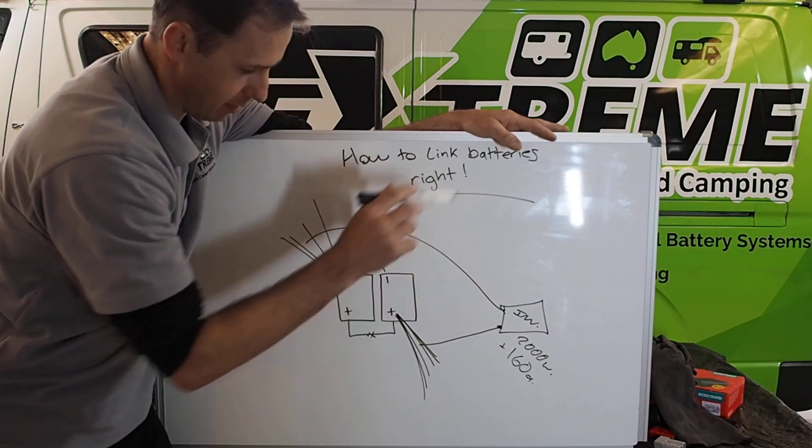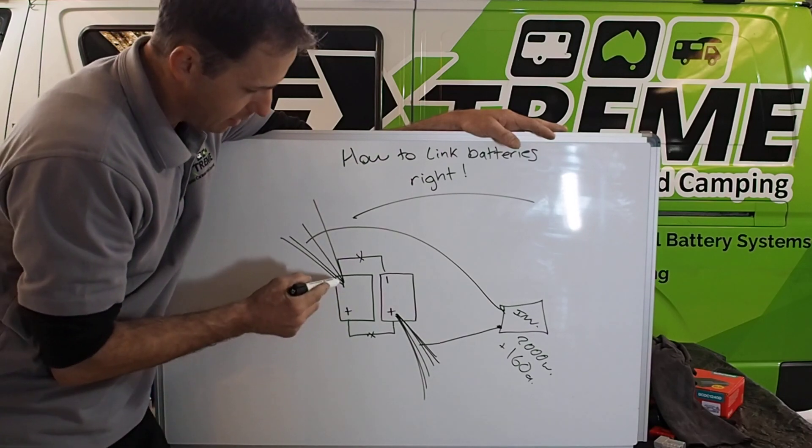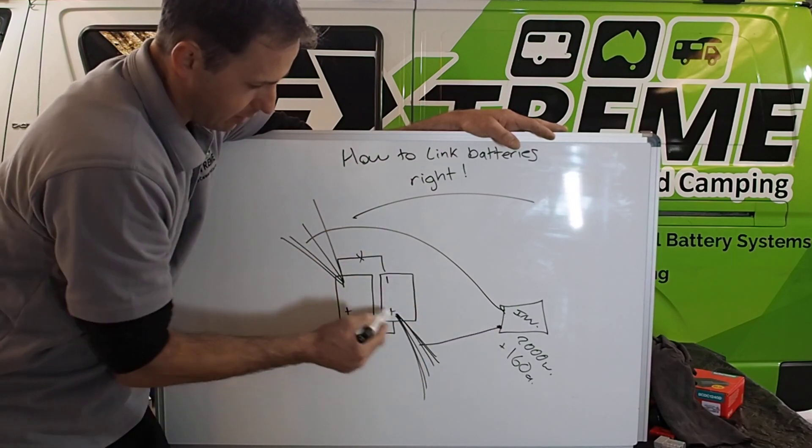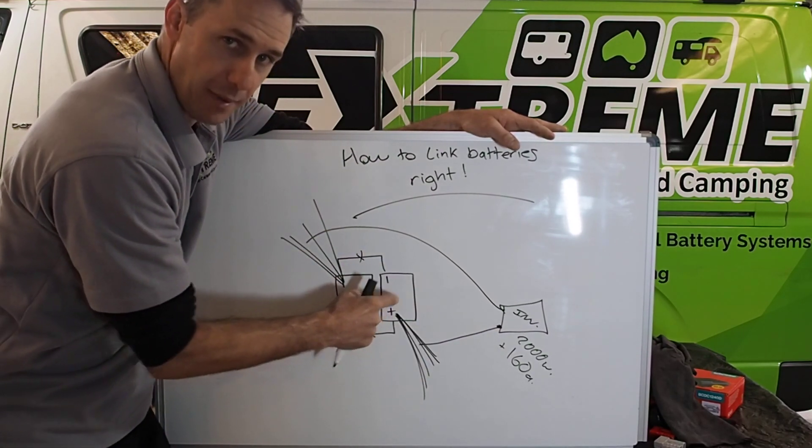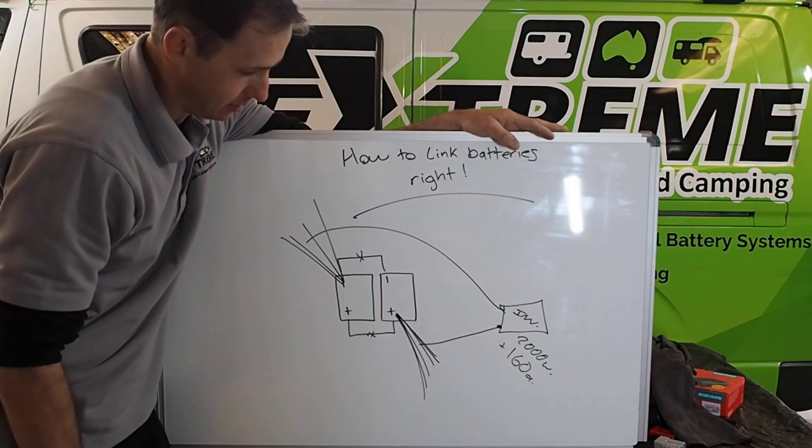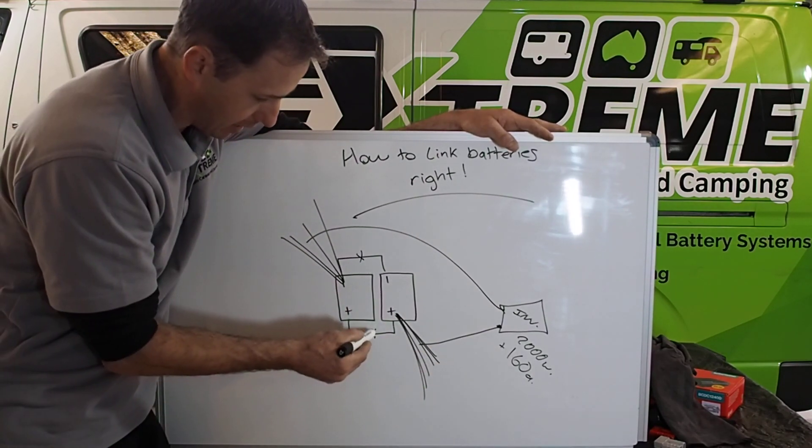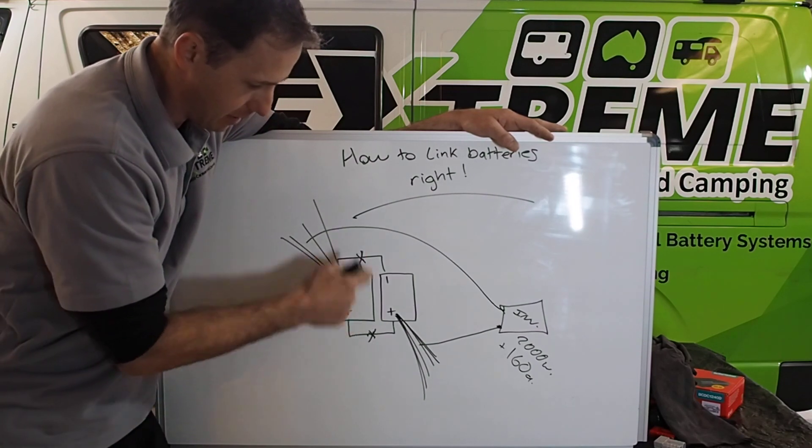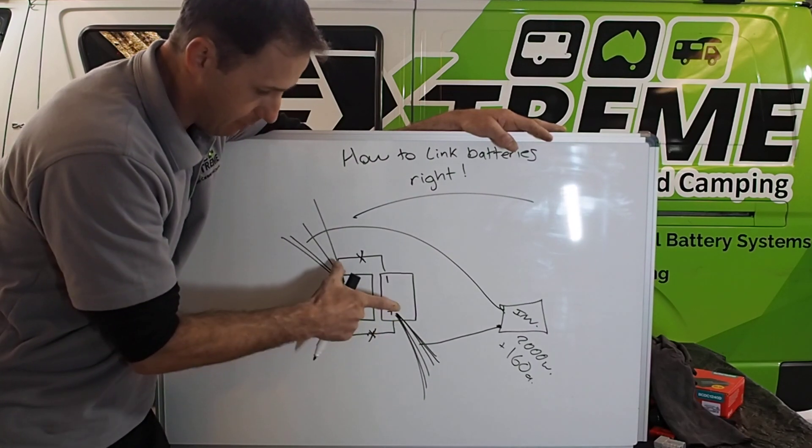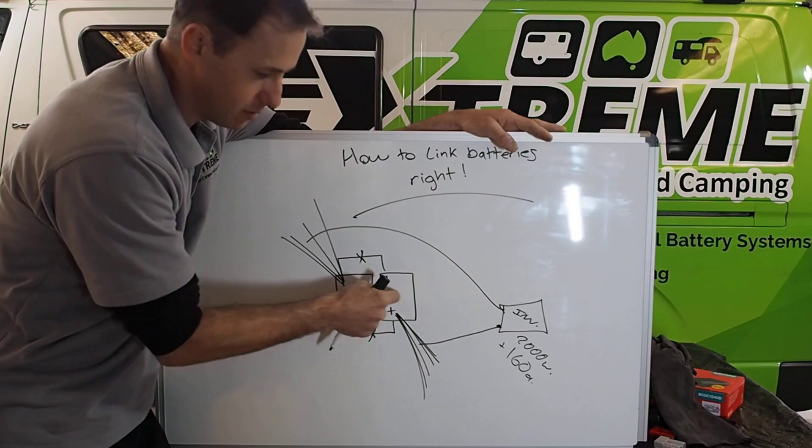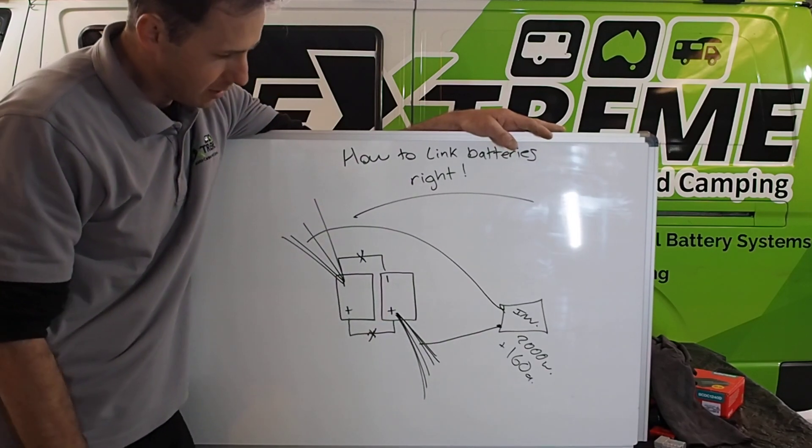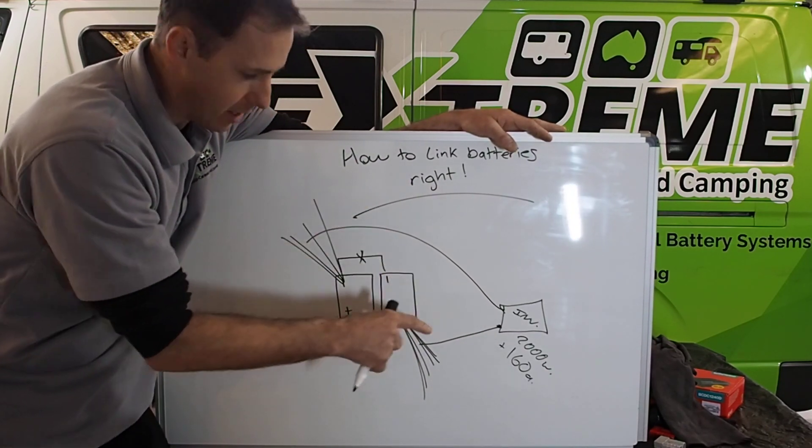Now I haven't drawn any fuse in this, but it just gives you an idea. You're pulling power over both batteries evenly. You're pulling power evenly because you're bound by the gauge of these cables. As long as they're thick enough, current and voltage will be identical on both these batteries. This is the right way of doing that.